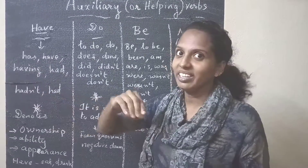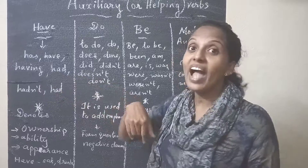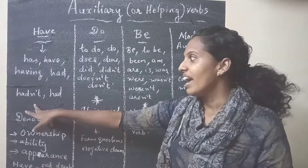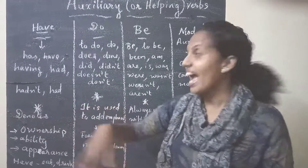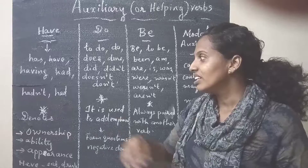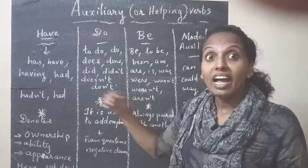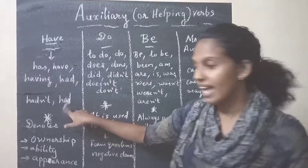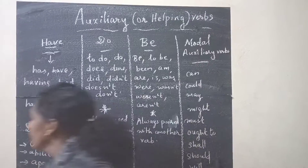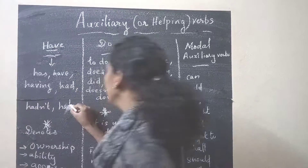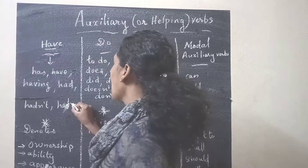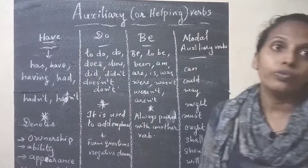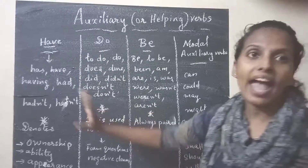The other forms include 'having' as the present participle. And for negative forms, we have 'haven't' and 'hasn't.' So these are all the forms of have.